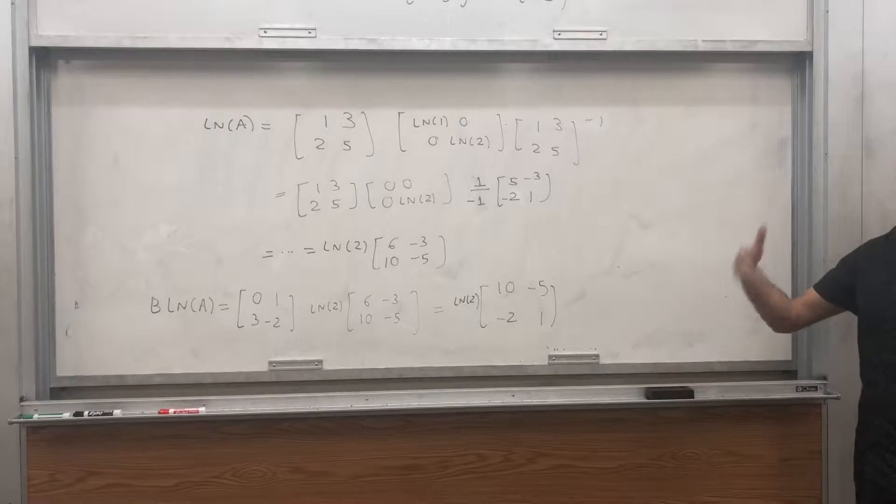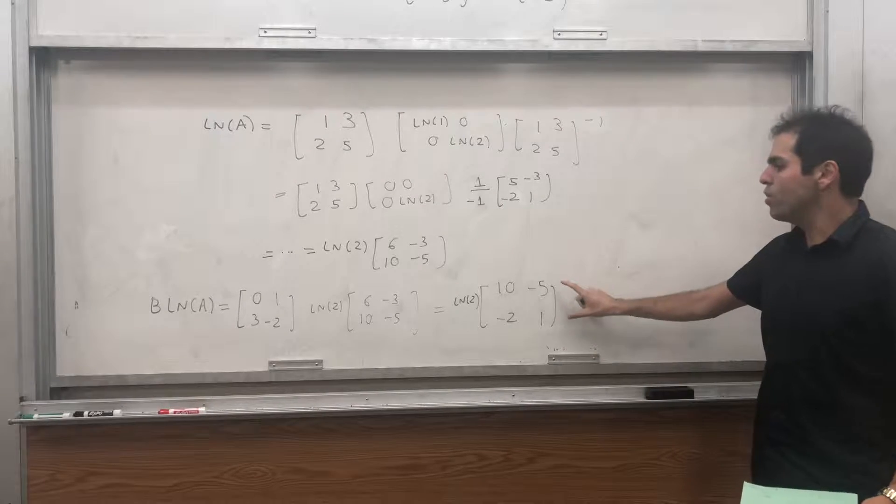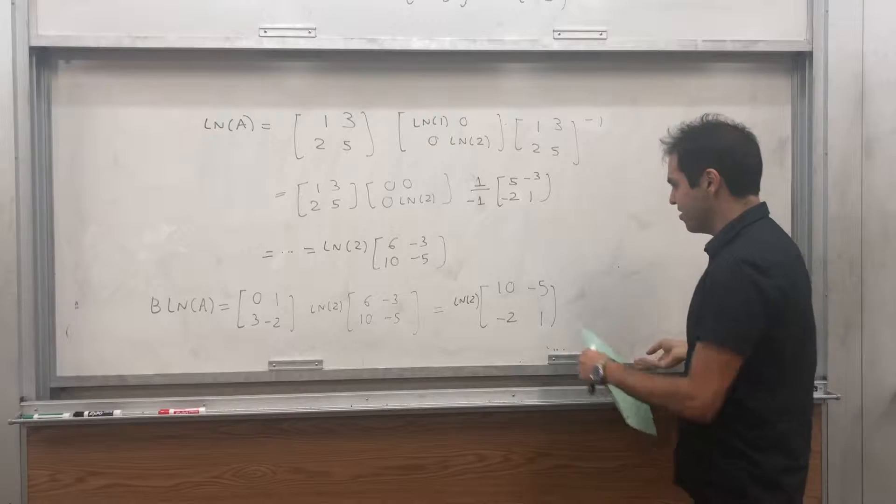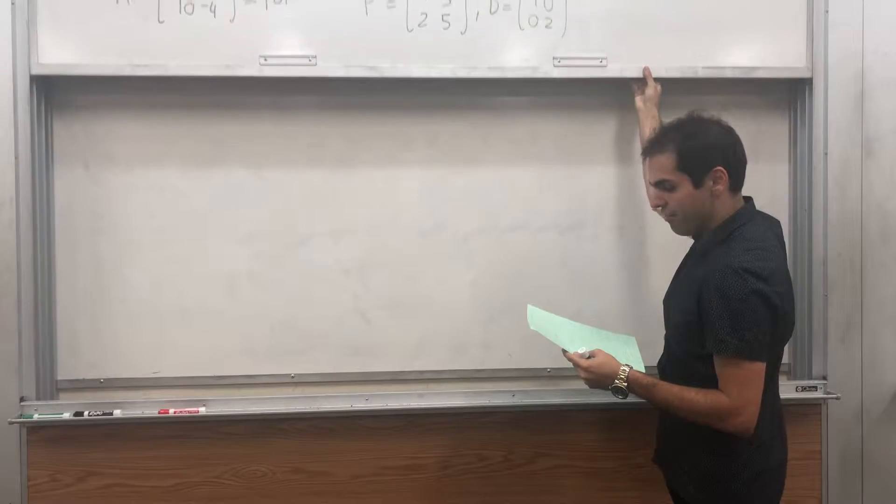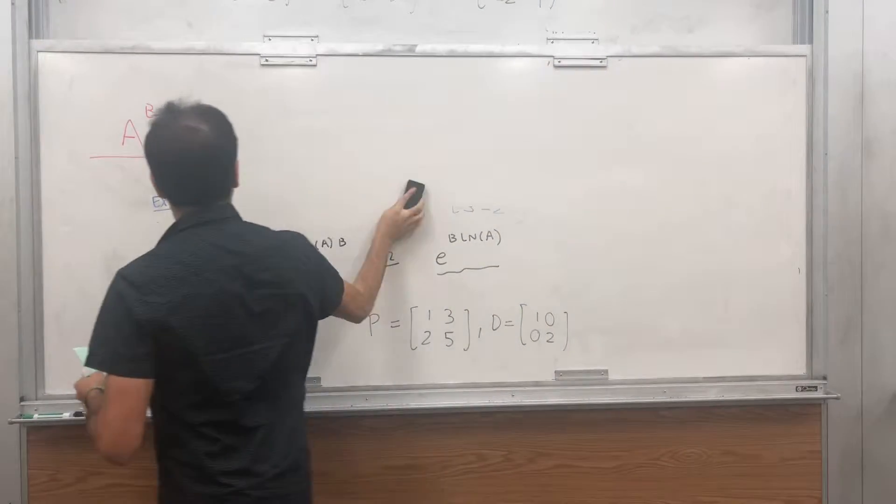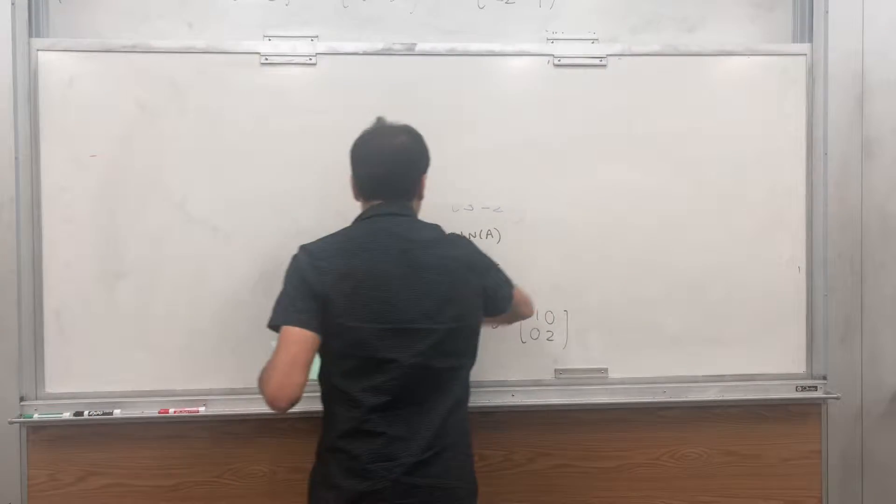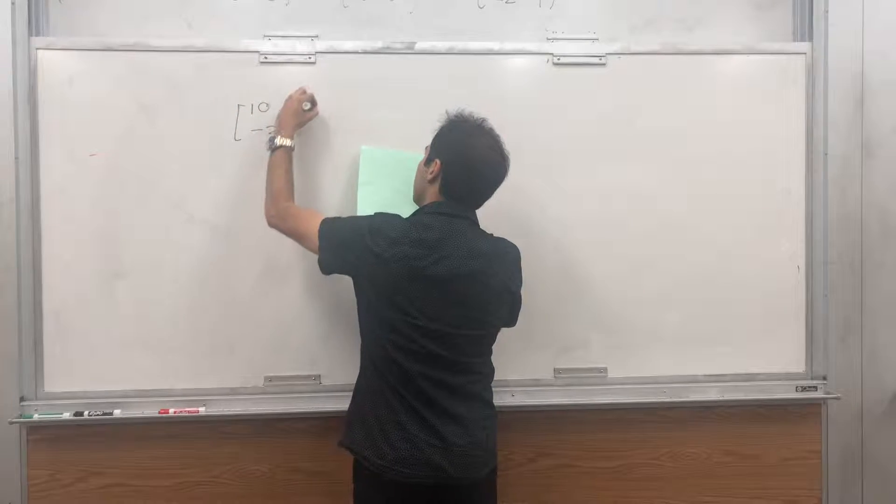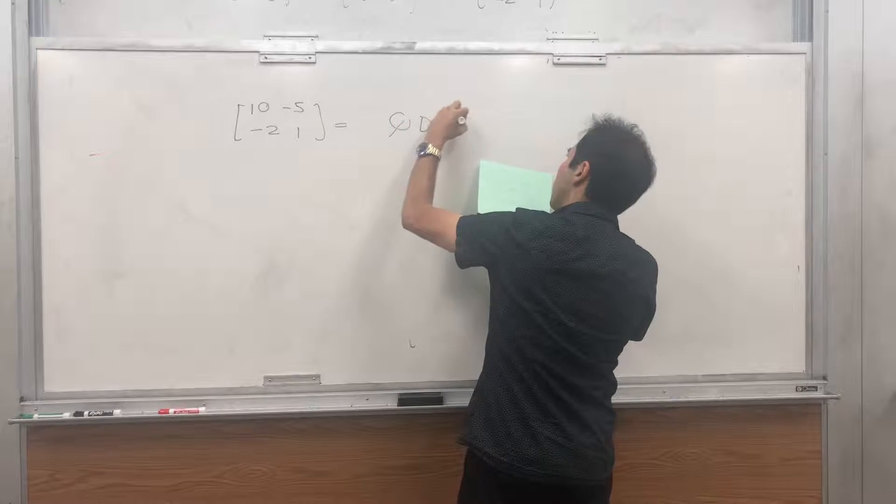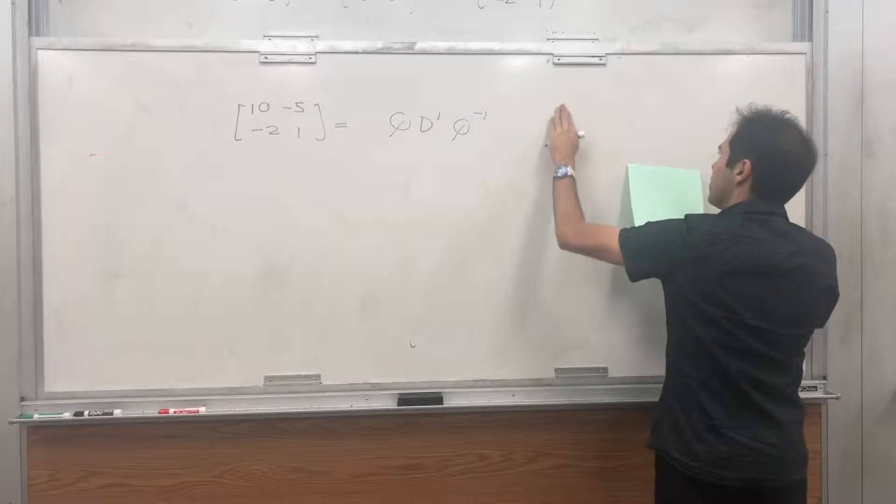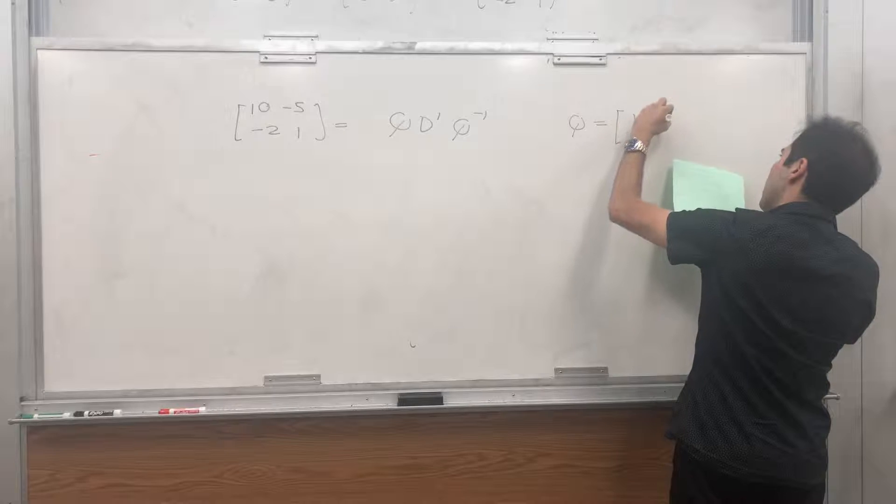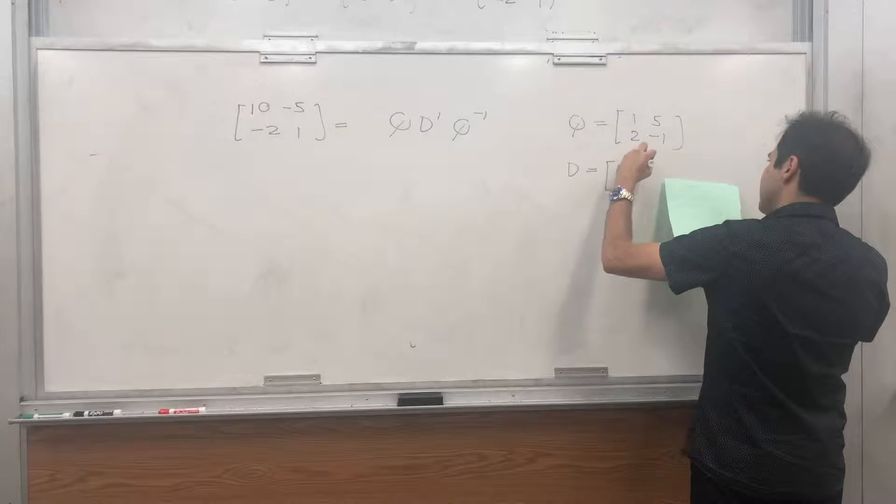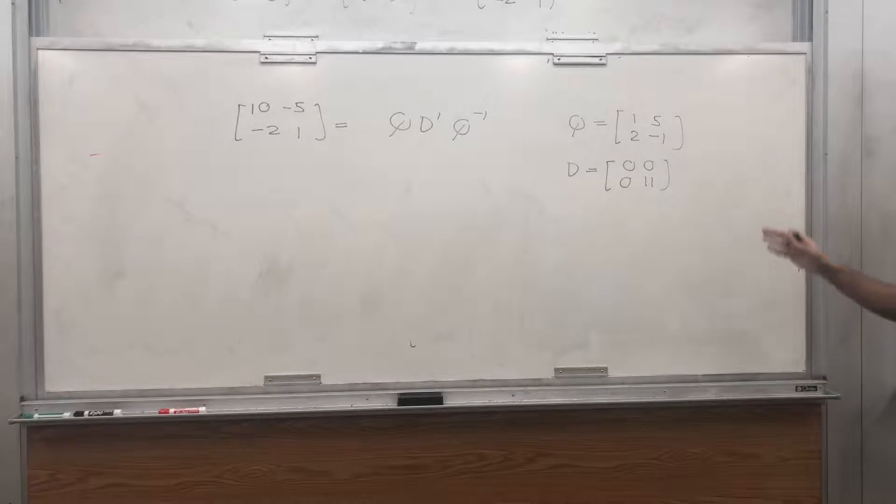Alright, so we have this matrix, and the next thing is, well, we want to calculate E of that. So, what we have to do, we have to diagonalize this matrix. And, I have done the calculation, so it turns out, 10, minus 5, minus 2, 1. So, 10, minus 5, minus 2, 1. You can write this as, let's say, Q, D prime, Q inverse, where Q, I don't know why I write P, Q is the matrix, 1, 2, 5, minus 1. So, you can check that 1, 2, and 5, 1 are eigenvectors of this matrix, and D is the matrix, 0, 0, 0, 11.